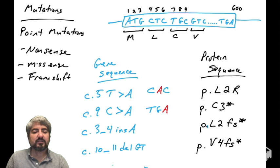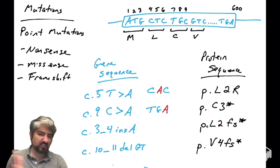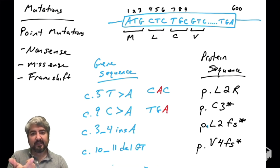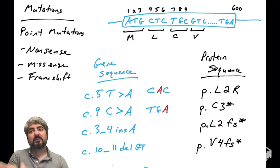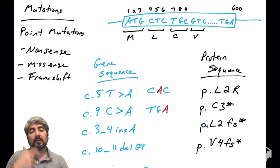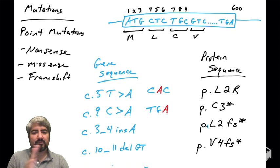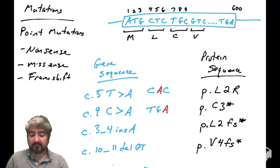Insertions or deletions of one or two nucleotides will shift the frame. But insertions or deletions of three nucleotides — would that shift the frame? It actually wouldn't. If you inserted three nucleotides you would just have an extra amino acid; if you deleted three nucleotides you'd lose one amino acid, but the frame would not shift. That happens sometimes as well.